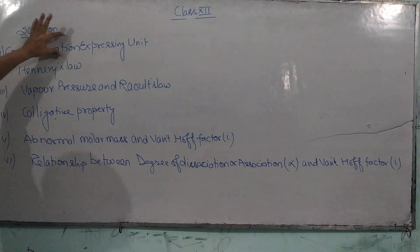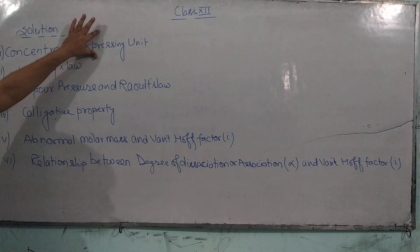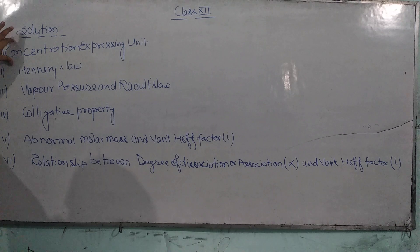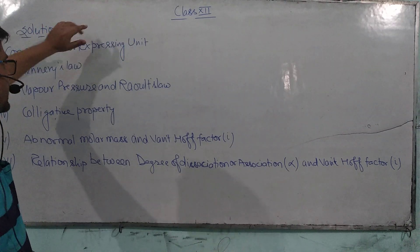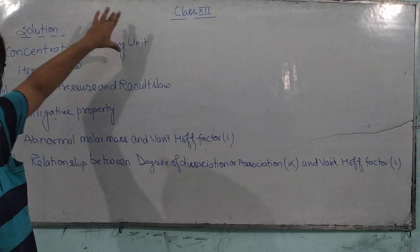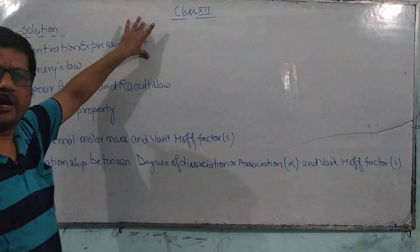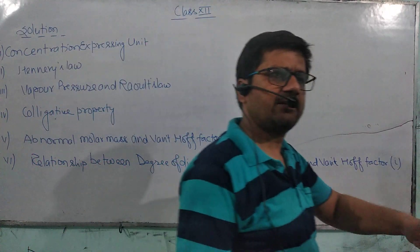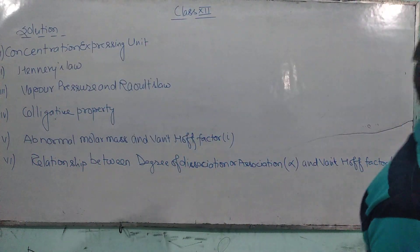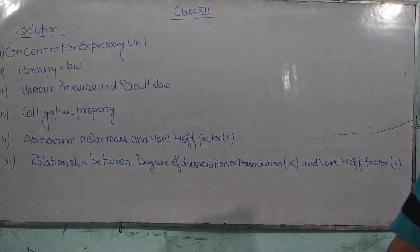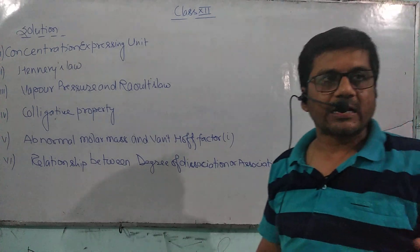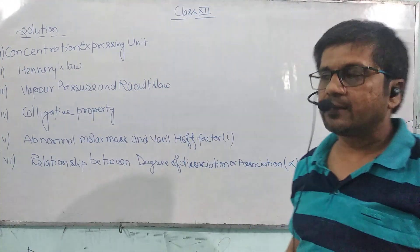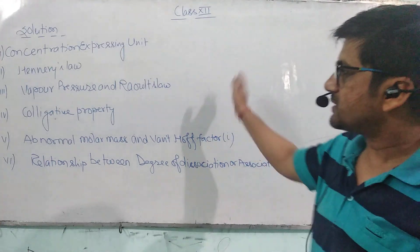Concentration Expressing Units — we have two types and we will discuss them. These include Molarity, Normality, Mass Percentage, Volume Percentage, PPM (Parts Per Million), Formality, and more.